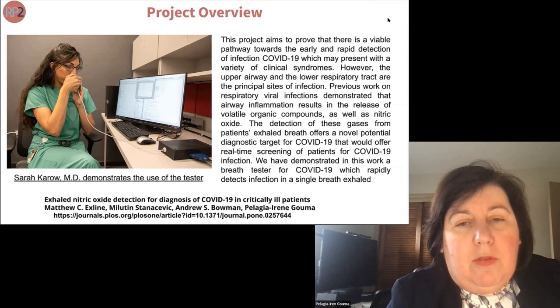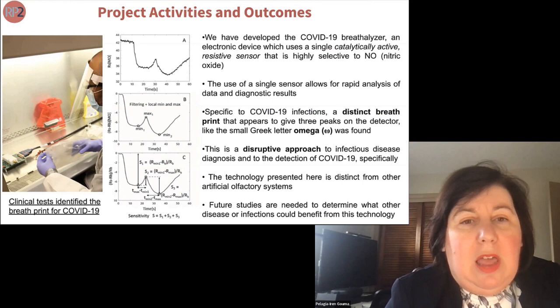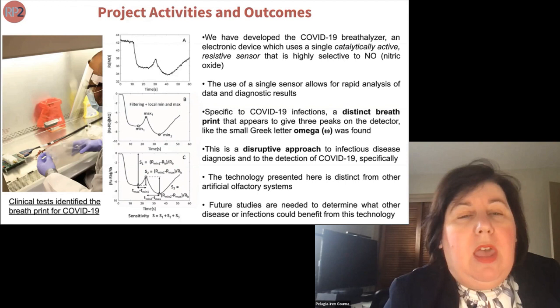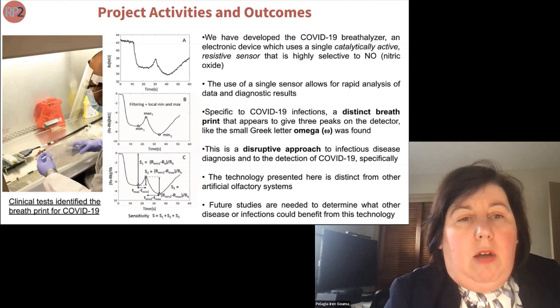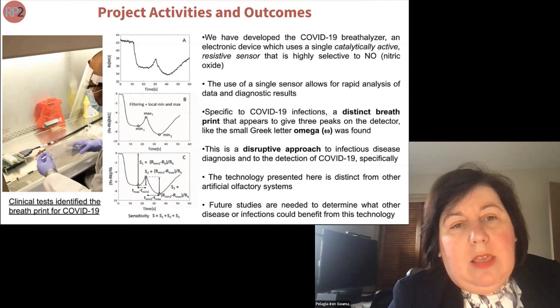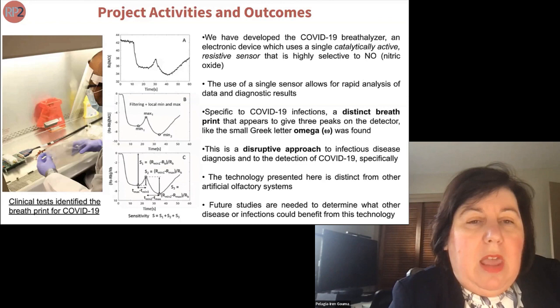The work is based on identifying gaseous biomarkers in breath that show the body's response to infection. It was very specific to COVID-19. At the heart of the breath test is a single catalytically active resistive sensor that is highly selective to nitric oxide, enabling rapid diagnosis of SARS-CoV-2 infection with a single sensor. We have a unique breath print associated with the disease — a temporal change of the gas distribution over the sensor that has a small omega shape as shown in figure A.